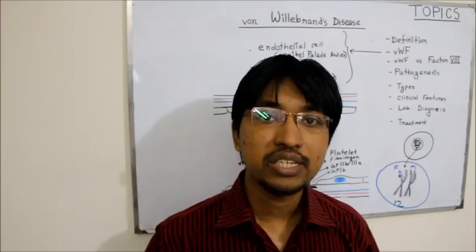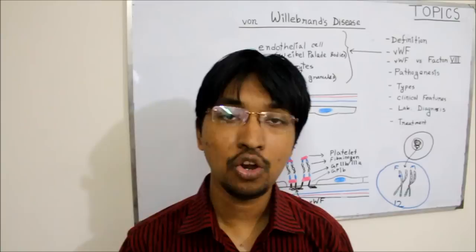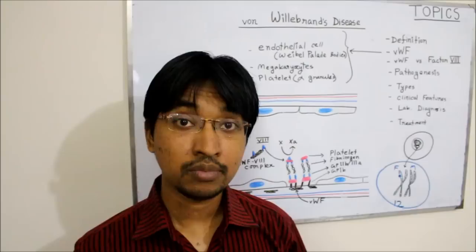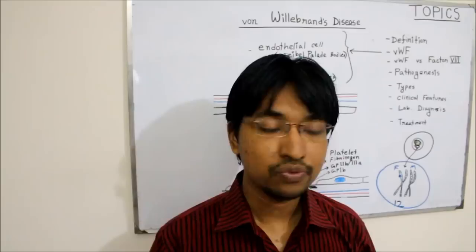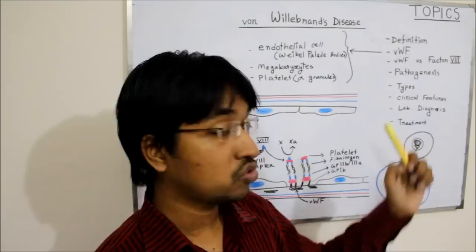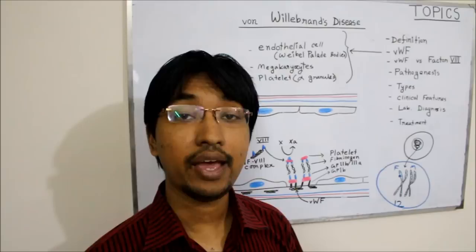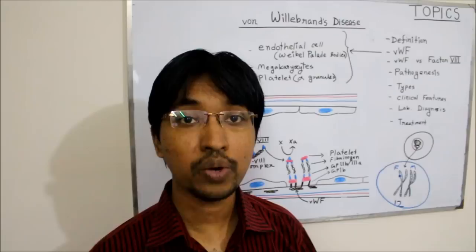The second difference is gene location. The gene responsible for encoding von Willebrand factor is located in chromosome number 12, while the gene responsible for encoding factor 8 is located in the X chromosome. Factor 8 deficiency due to an X chromosome problem leads to hemophilia. The third difference is function: von Willebrand factor helps in platelet adhesion and stabilizes factor 8, whereas factor 8 functions to activate clotting factor 10 in the intrinsic pathway.